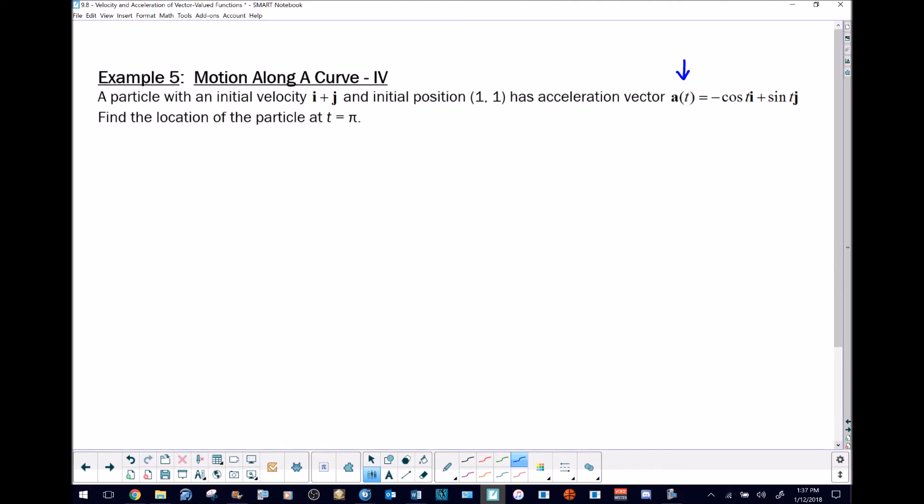When we see that this initial velocity i plus j is given to us, that means the velocity vector at time zero is going to be equivalent to that result, i plus j. That's a clue we can use to find information once we arrive at our velocity vector.